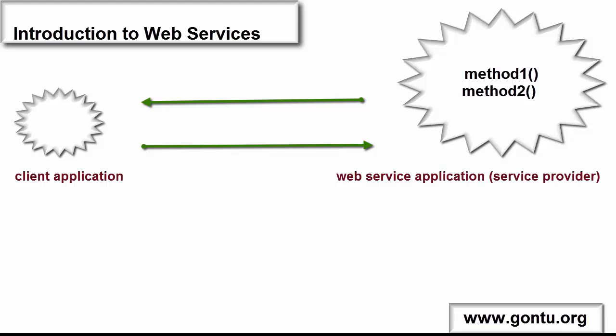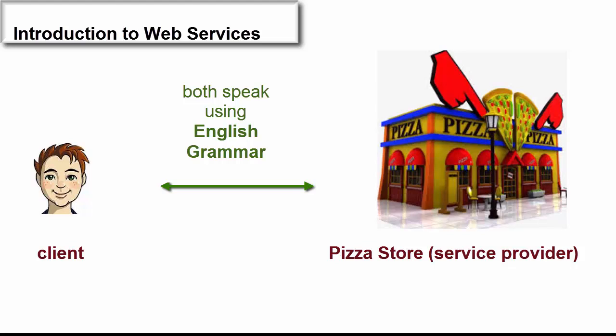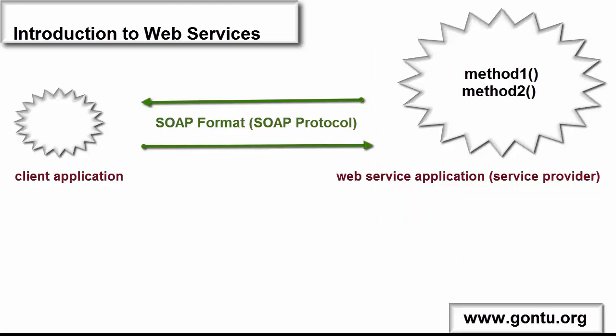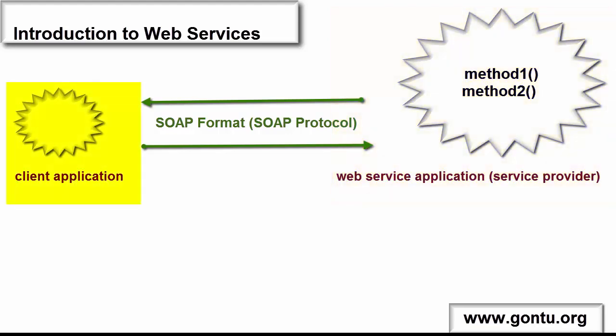In a similar manner, when a client makes a call to the method of a web service application and the web service application in turn sends a response back to the client, both communicate with each other using SOAP format, also called SOAP protocol. Just as the client and pizza store guy use English grammar format to communicate, here client and service provider use SOAP protocol to communicate. SOAP protocol basically says communication between two softwares should happen in an XML format by following certain rules. As a result, this web service application is termed a SOAP-based web service application and its client is termed a SOAP-based client.